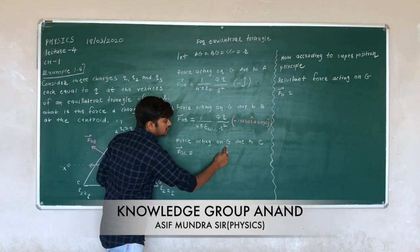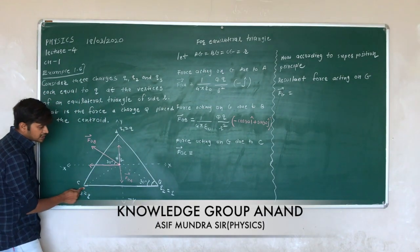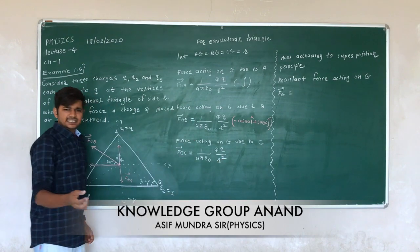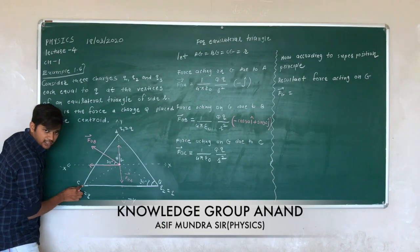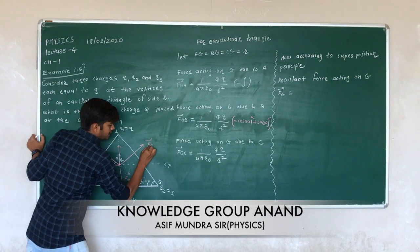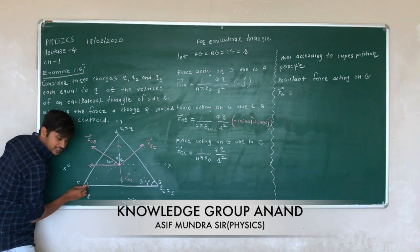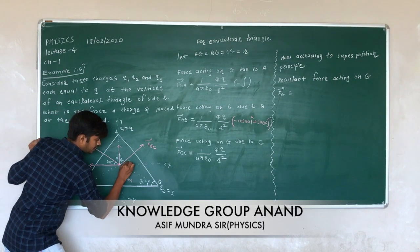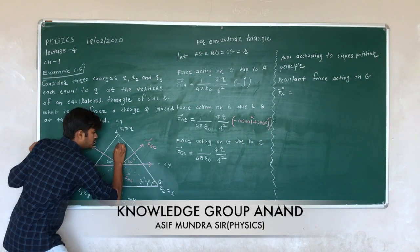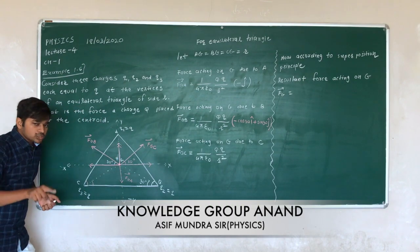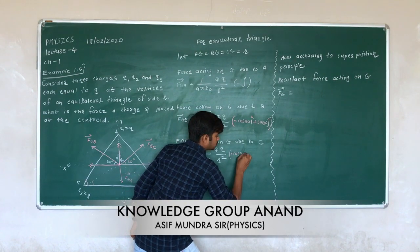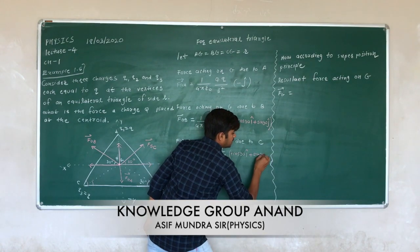Now, force acting on G due to C — F_GC: (1/4πε₀)(Q·Q/R²). The force acting due to C on G is repulsive, in this direction. The angles are again 60, 30, and 30 degrees. The two components: one component is along the positive x direction, and another component is along the positive y direction. Both components are in the positive direction. So the unit vector is written as (+cos30° î + sin30° ĵ).